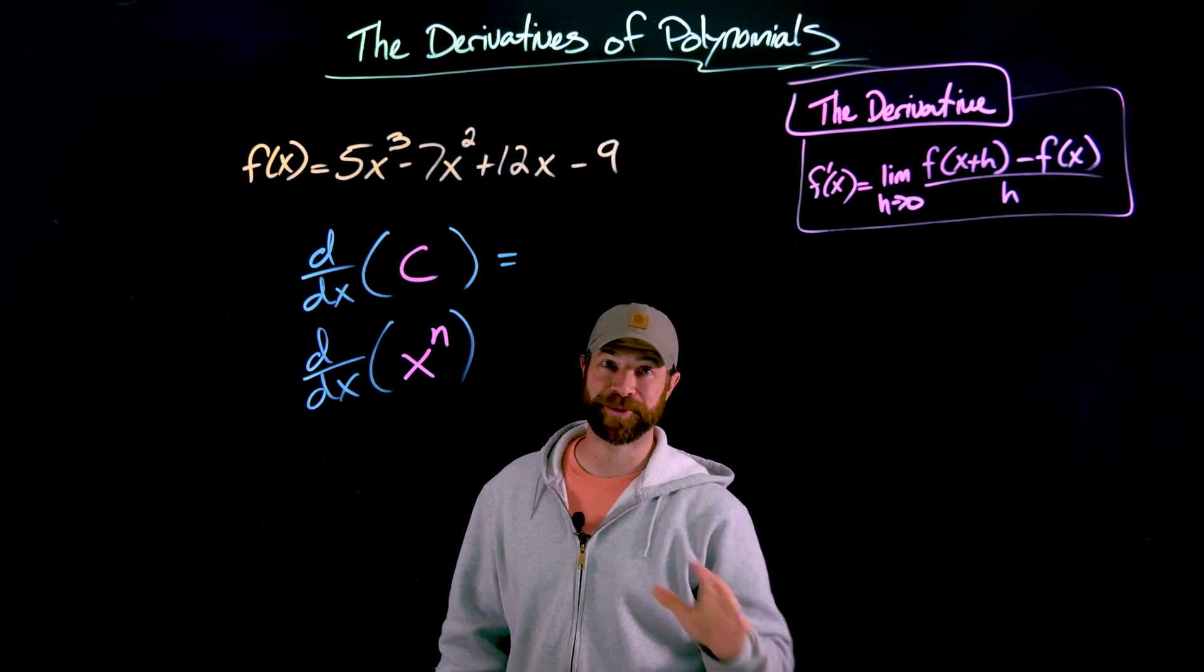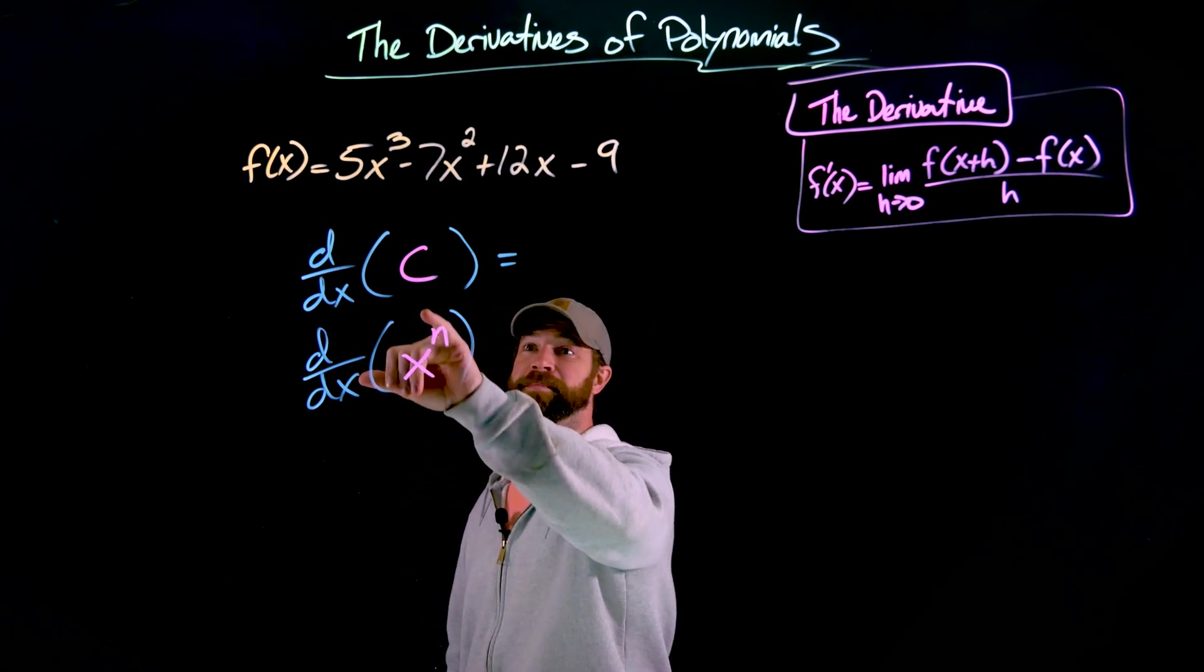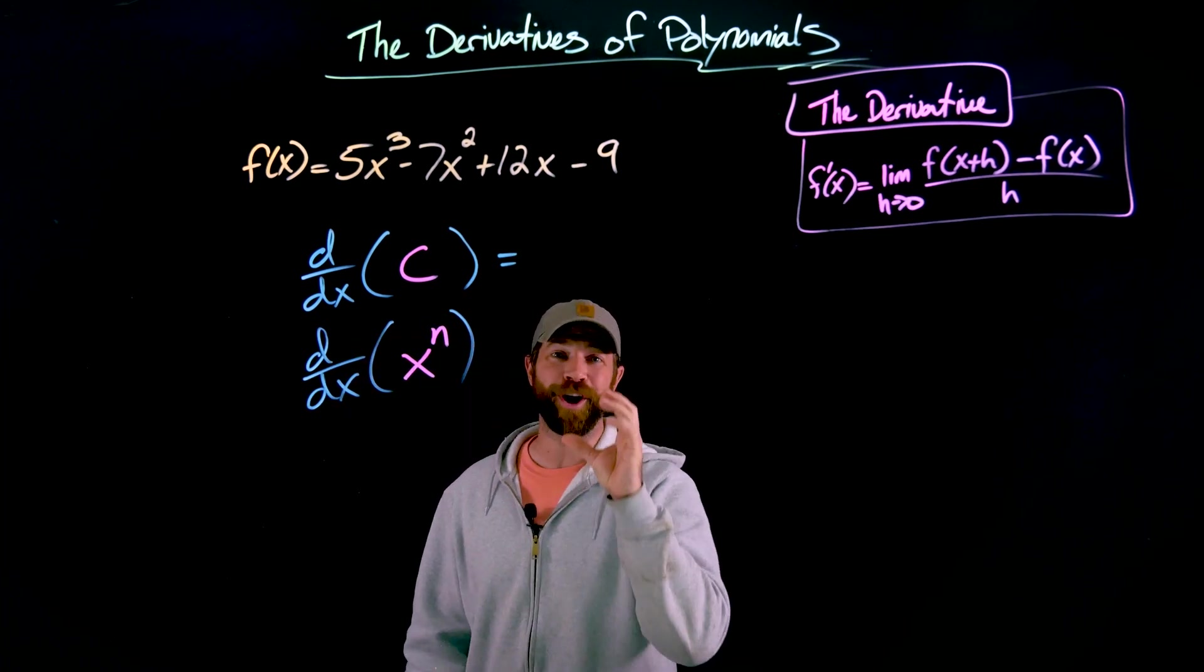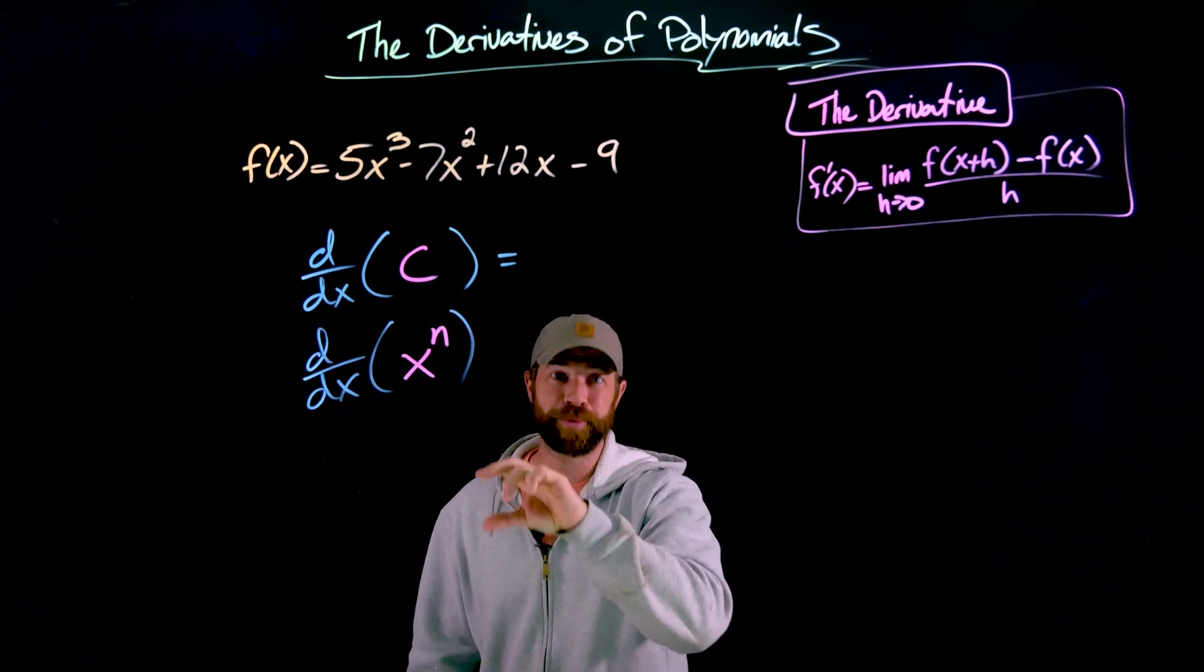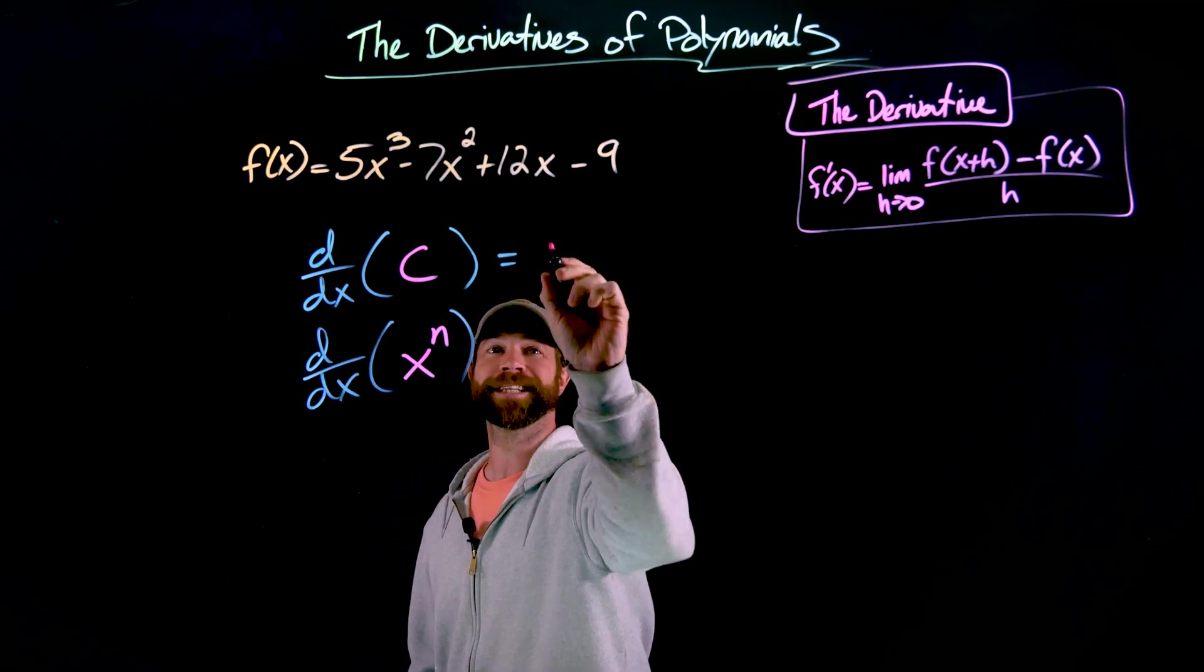The first of these is extremely easy. I'm not going to show a rigorous proof, but the idea being the derivative or the rate of change of a constant function, a function that outputs the same thing for every x value. The rate of change is zero.